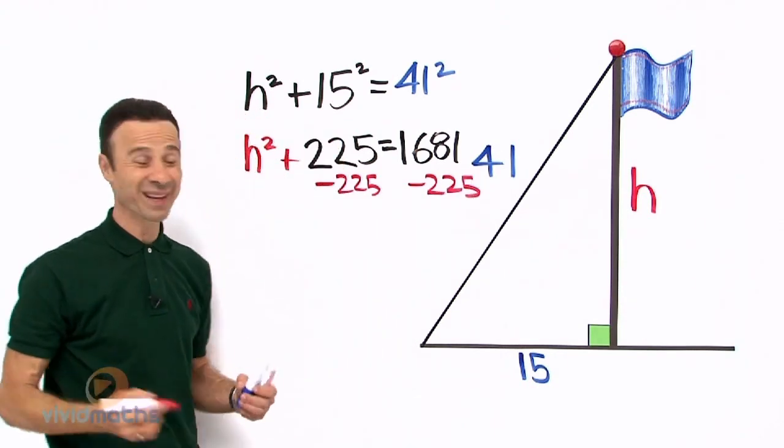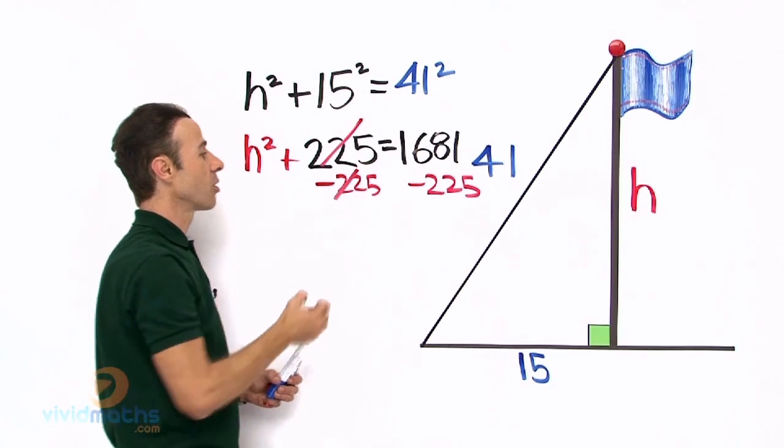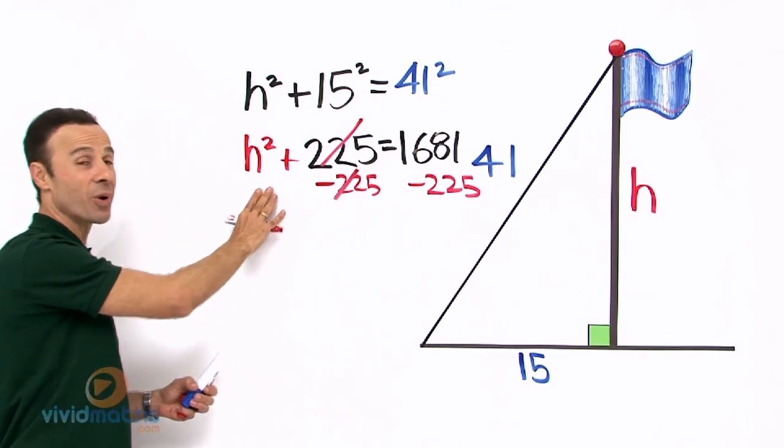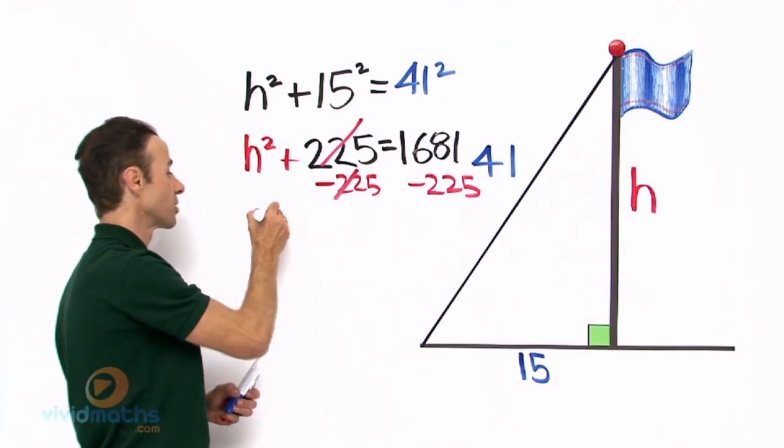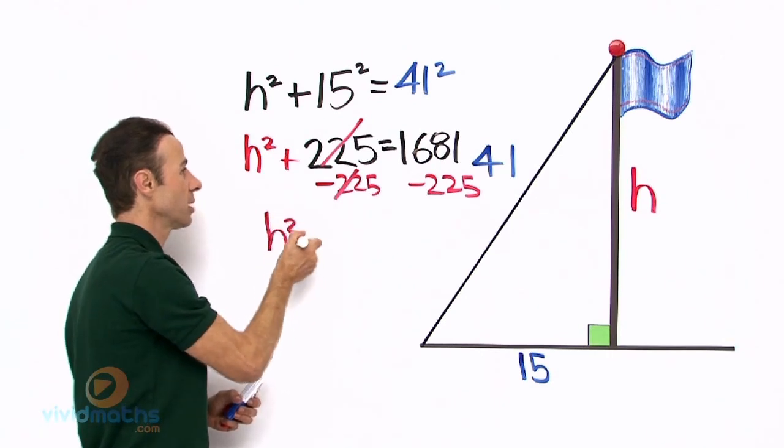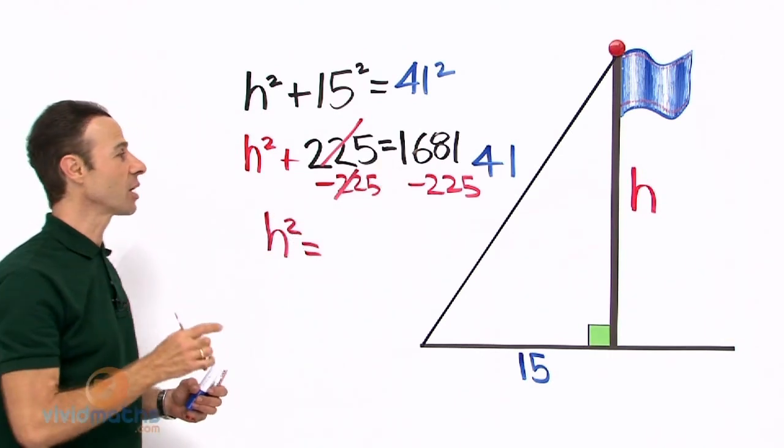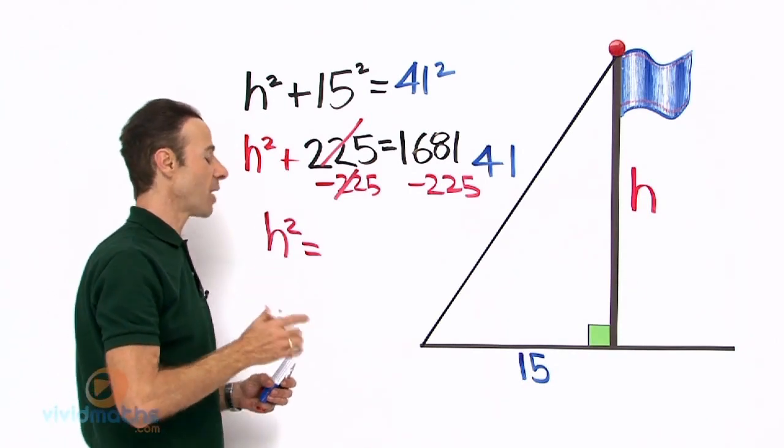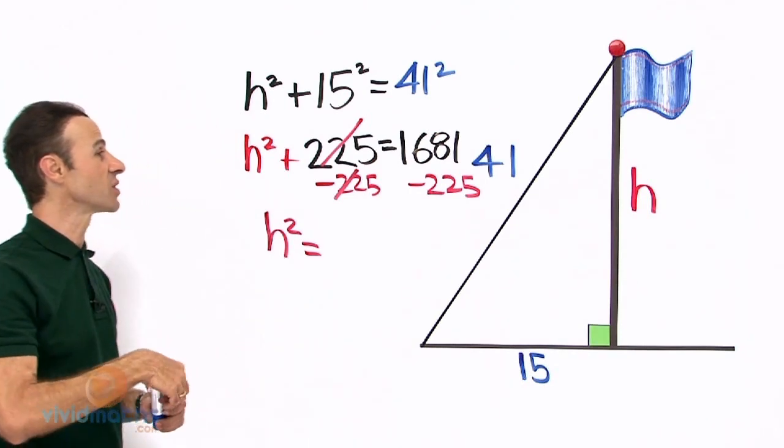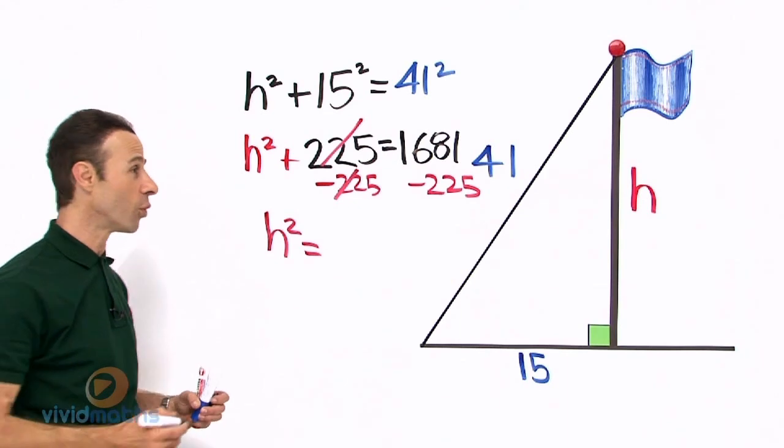Over here the 225 simply cancel, let us get rid of them, they are gone. So we are left with H squared by itself here on the left hand side. So that is H squared equals now 1681 take away 225 on the calculator, gives us a grand total of 1456.